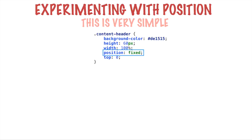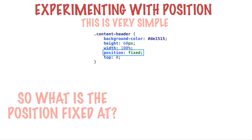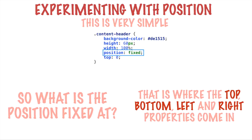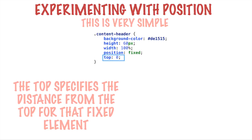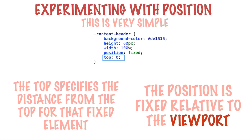When we use position: fixed, what is the position fixed at? Fixed to what? This is where the second property we added — top — comes into the picture. Along with top, bottom, left, and right are also properties that can be specified with position: fixed. Top: 0 basically means you want to position this particular element at a certain distance from the top of the viewport. The top specifies the distance from the top for that fixed element. Bottom, left, right will similarly mean distance from the bottom, left, and right. The position is fixed relative to the viewport of the browser.